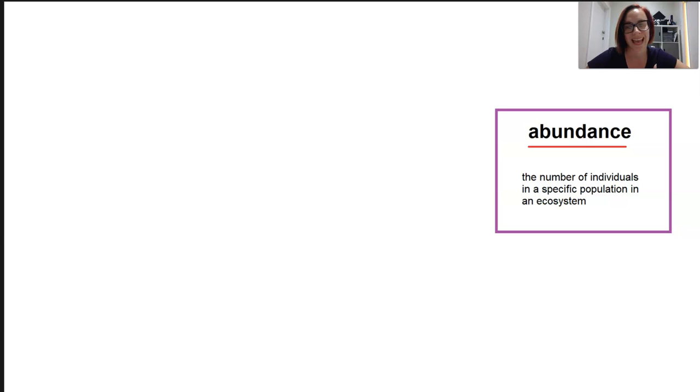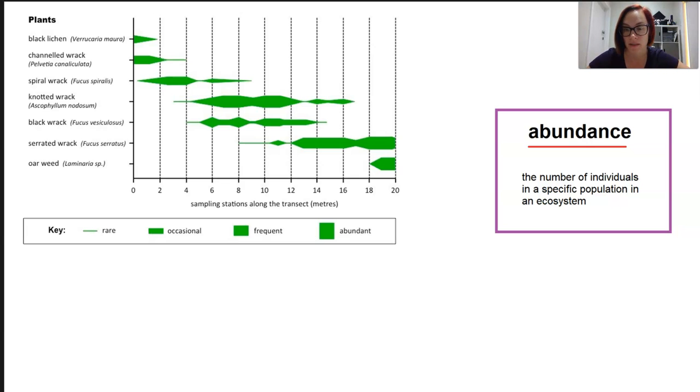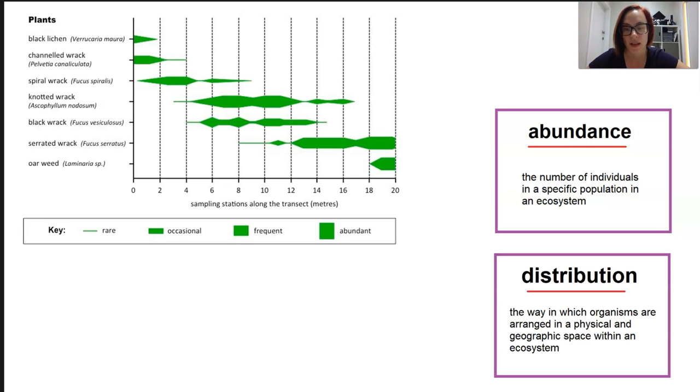If we're talking about distribution and abundance of an organism we need to understand what these words actually mean. So the abundance of an organism looks at the number of individuals in that population and the distribution is the way in which or the geographical location or region in which it's found and its extent within this area. In that graph right there it basically shows abundance and distribution. It's showing abundance based on how wide the green strip is and it's also showing distribution along a particular sampling line.